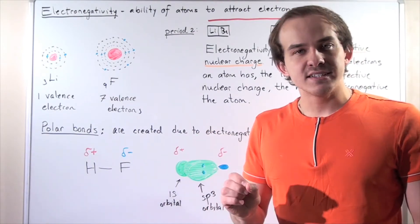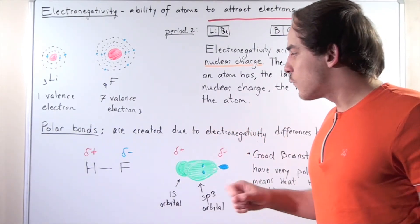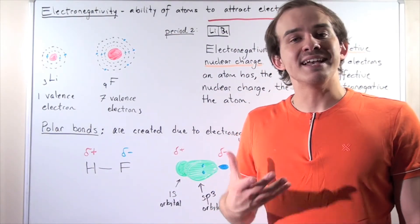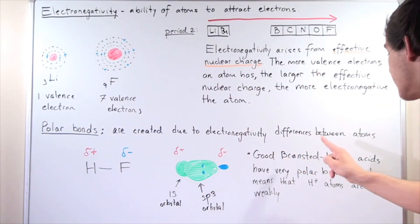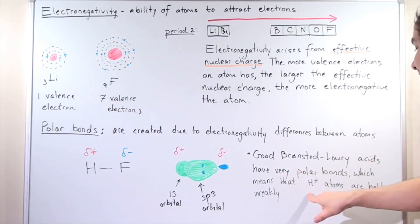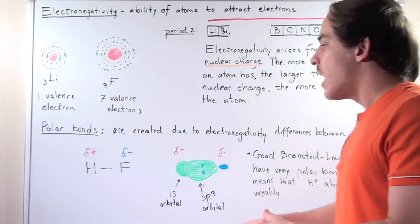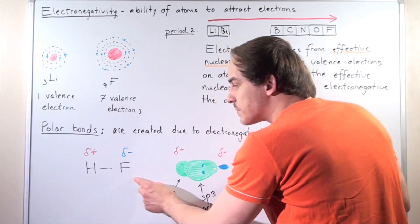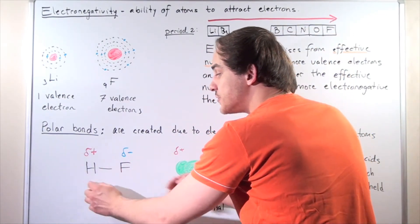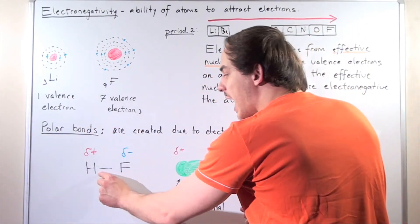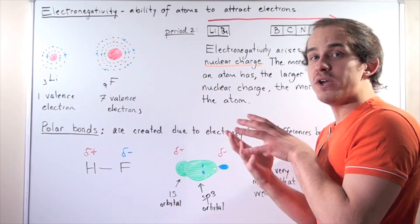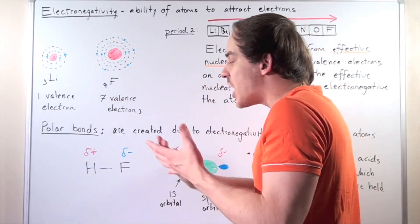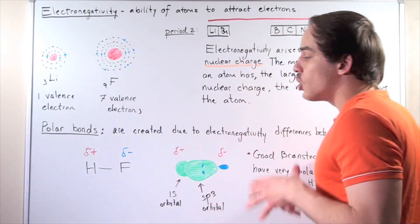Brønsted-Lowry acids are compounds that donate an H ion. Hydrofluoric acid is a Brønsted-Lowry acid because it has an H it can donate. Good Brønsted-Lowry acids have very polar bonds, meaning the H atoms are held very weakly and are donated readily. The large electronegativity difference between fluorine and hydrogen creates a very polar bond, so the H is held weakly — most electrons are closer to the fluorine. HF will readily dissociate in water to produce an H⁺ ion and an F⁻ ion.